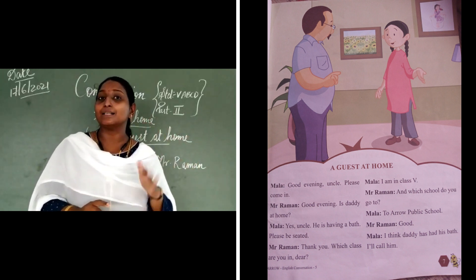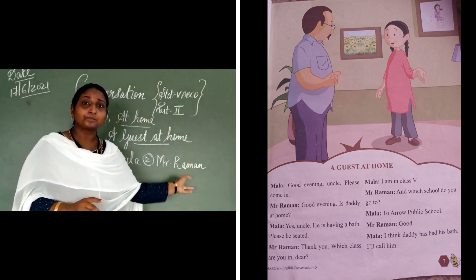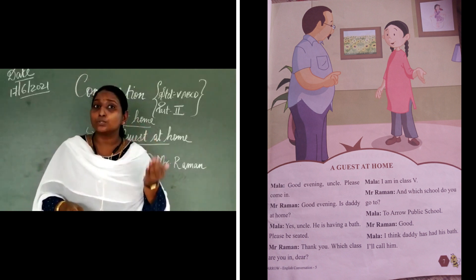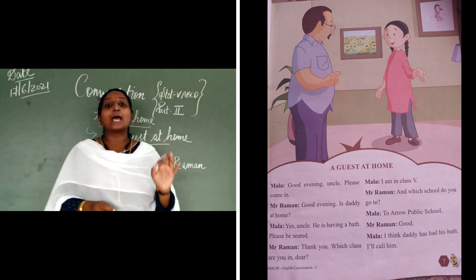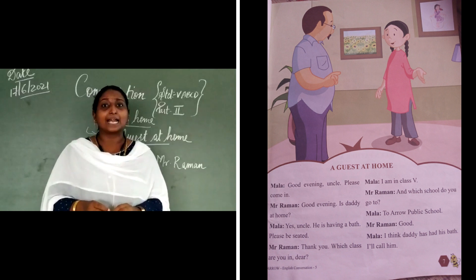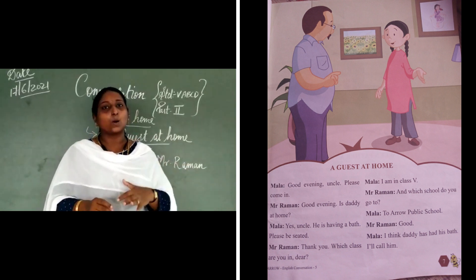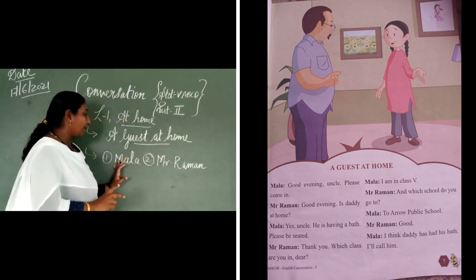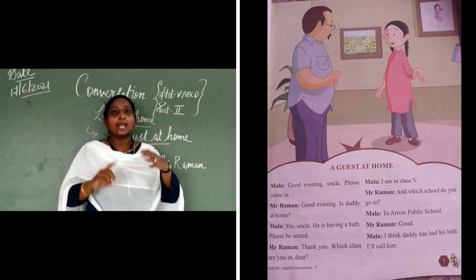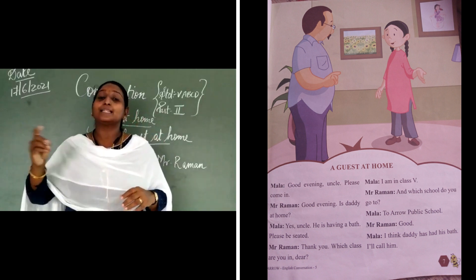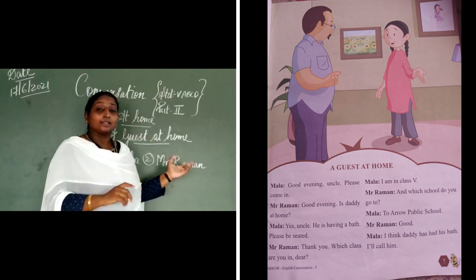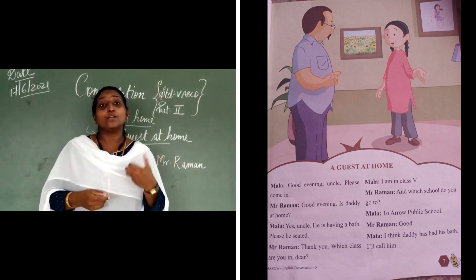Mr. Raman is asking Mala: Which class are you in? Mala answers: I am in class 5. Mr. Raman asks: Which school do you go to? Mala answers: I go to a public school. Mr. Raman says: Good, Mala. I think daddy has had his bath — I am going to call him. So Mr. Raman is asking Mala about her class and school, and he notices that daddy has likely finished his bath.